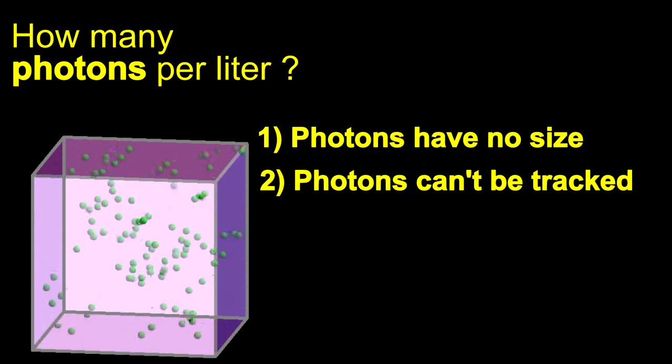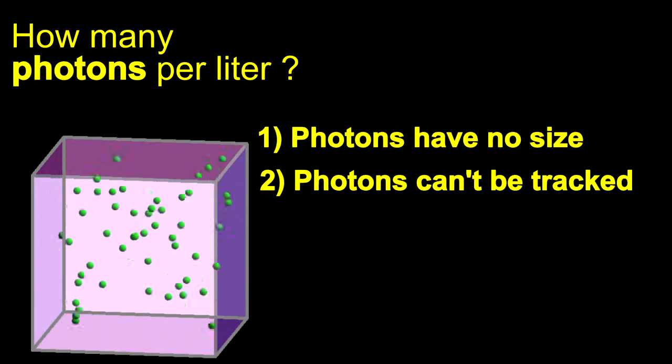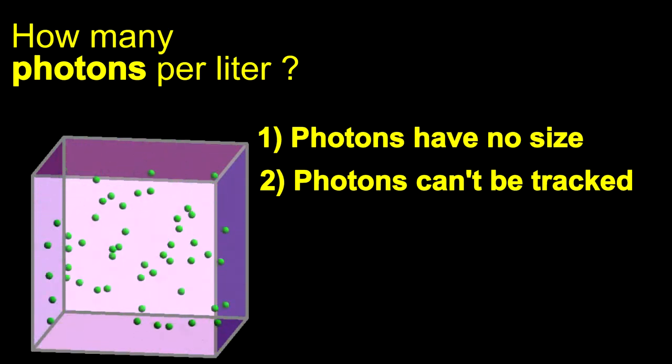The second problem is that it shows us being able to trace the path of the balls. This implies that the balls are distinguishable, which photons are not.